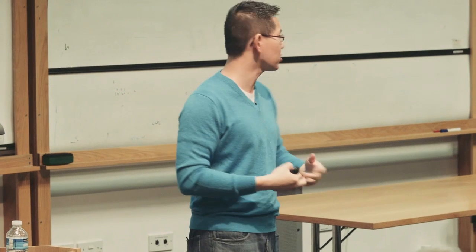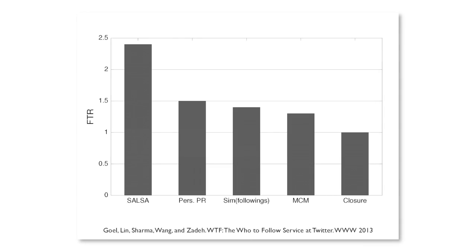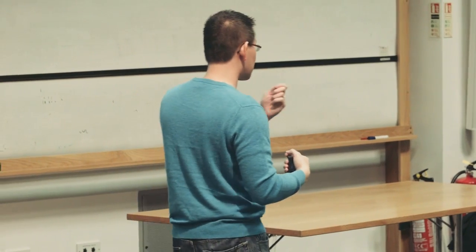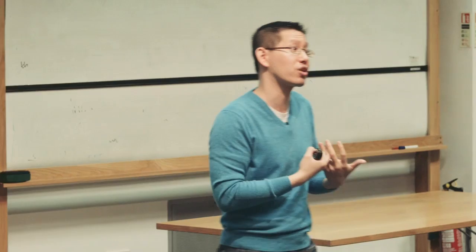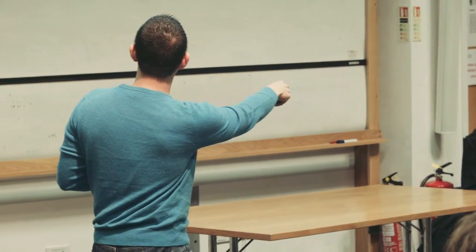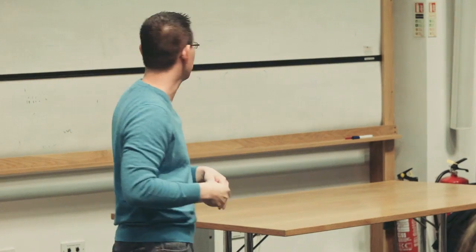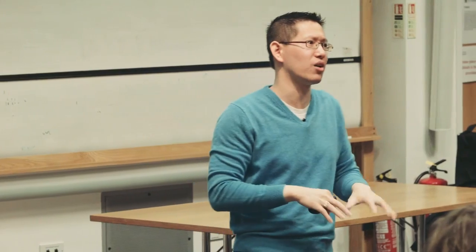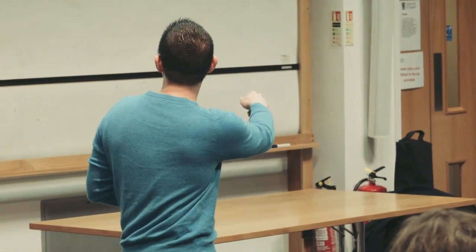Here's an evaluation of how well this works, also presented in a WWW paper a couple of years ago. The metric is FTR — follow-through rate — like click-through rate except it measures follows actually taken out of those offered. The baseline algorithm is a closure-based algorithm. Normalized to that, MCN is most common neighbors, Sim is cosine similarity, and then there's personalized PageRank. These are all classic algorithms from the literature. The Salsa algorithm does fairly well compared to these baselines.